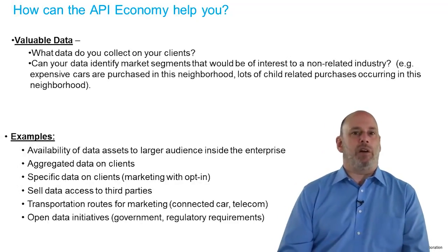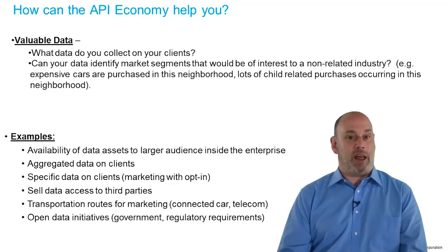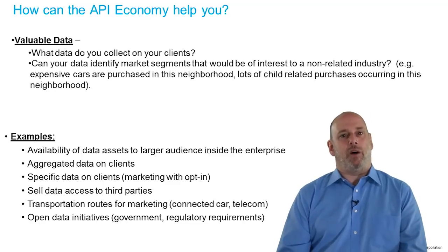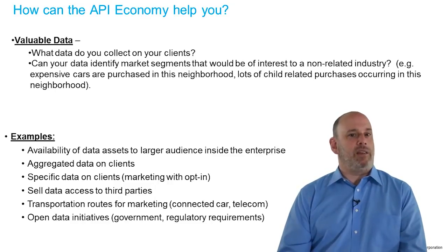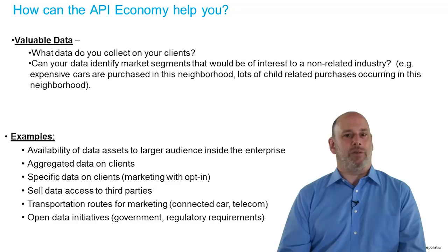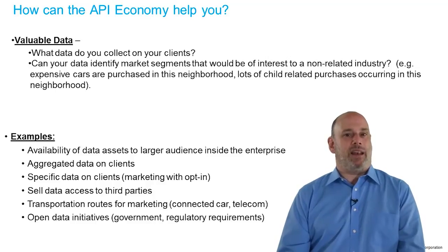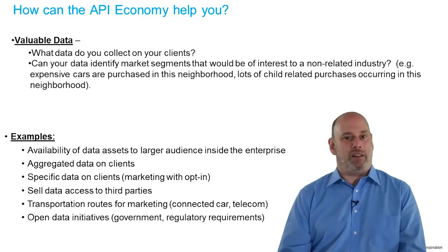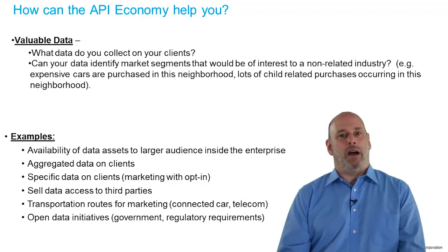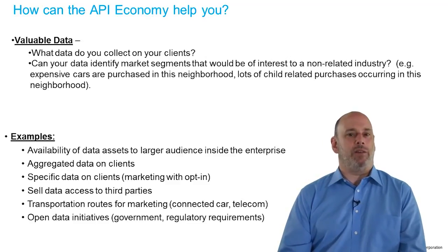For valuable data, getting access to this data for a larger audience inside the enterprise has tremendous value. You can also sell aggregated data on clients to third parties, or if clients opt into marketing, you might sell specific information on them to third parties. For connected cars or telecommunications companies, as people drive around the city, their route to work can be detected and sold in aggregate to third parties for marketing to particular audiences. In the government space, there are many open data initiatives that require access to data, and APIs are a very good way to do that as well.